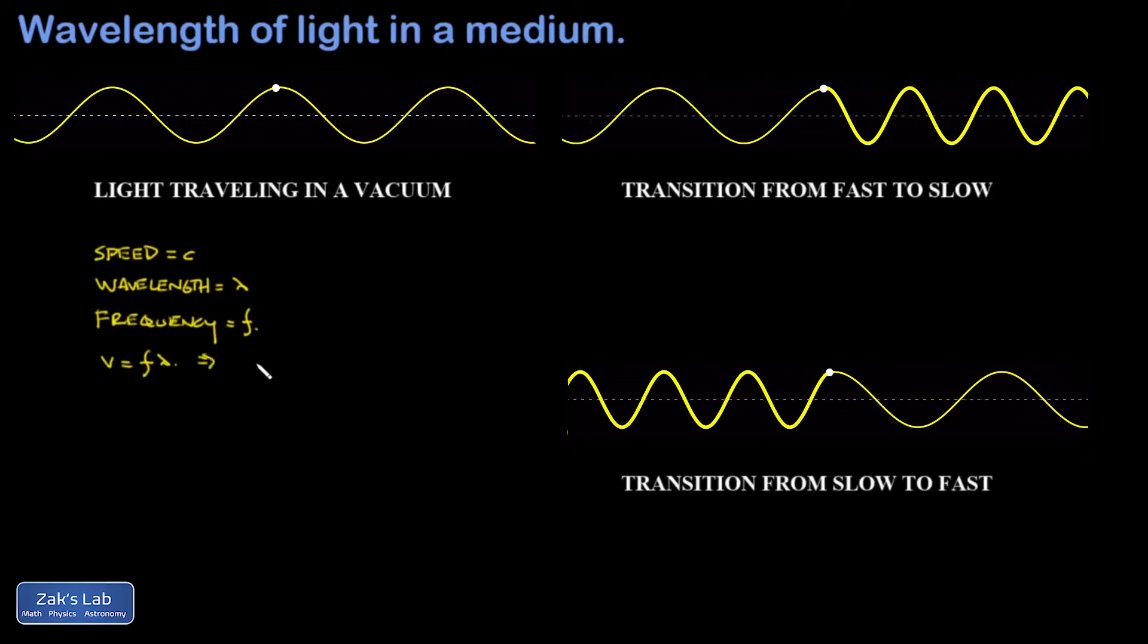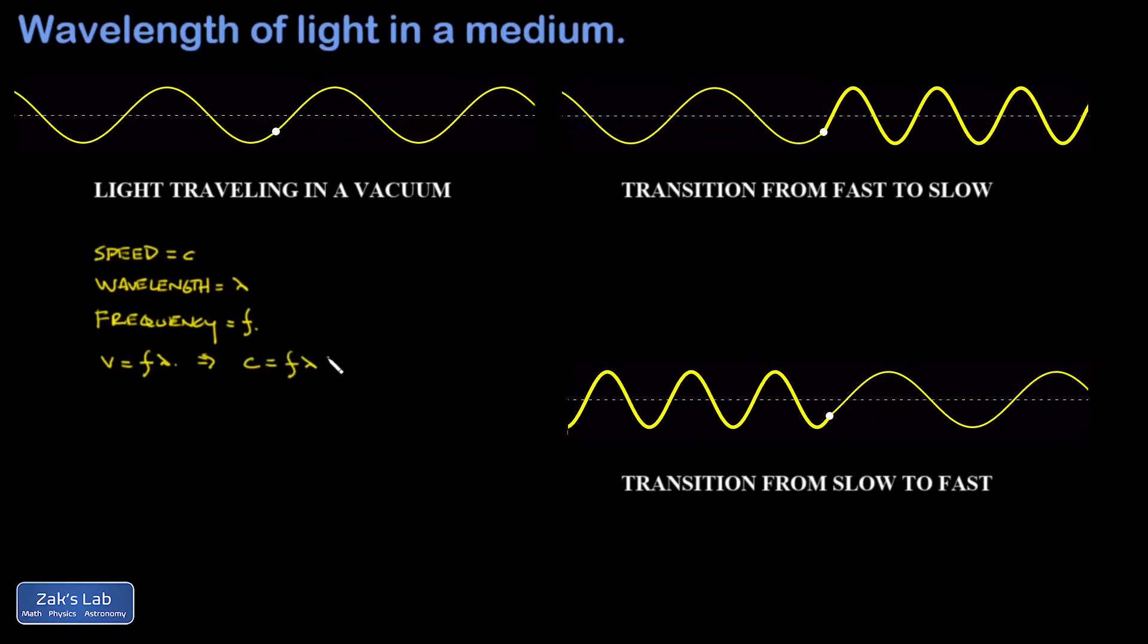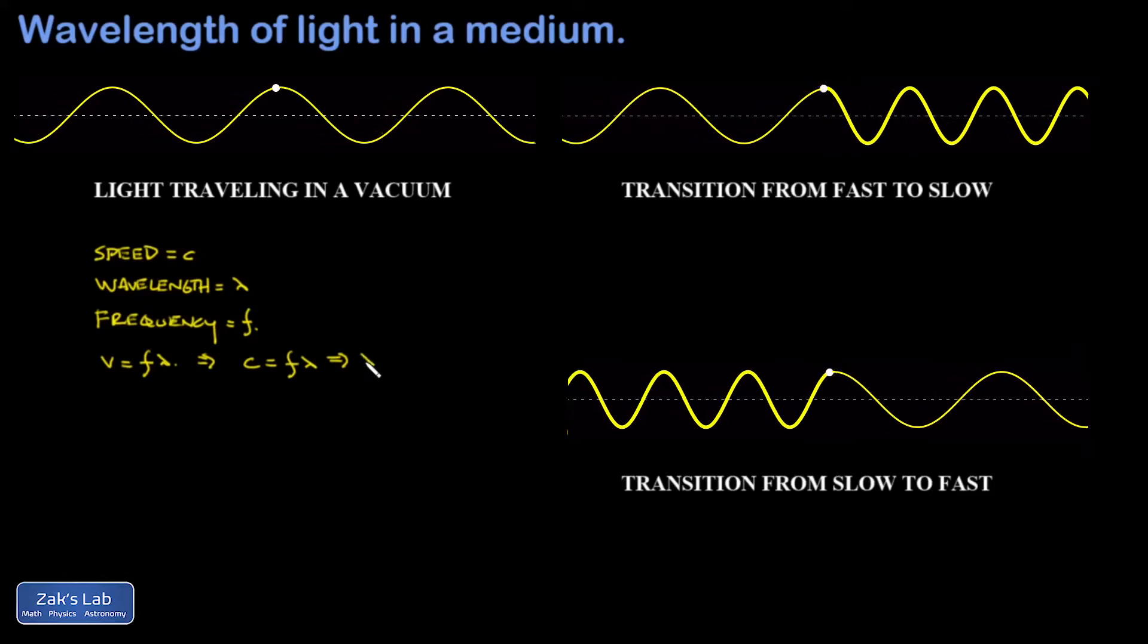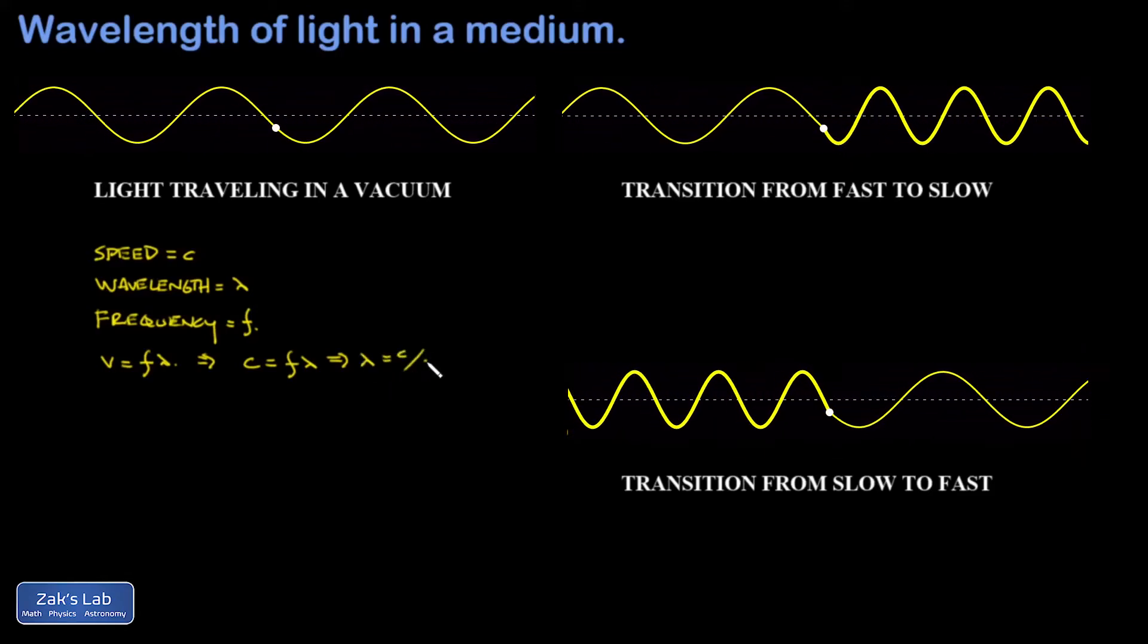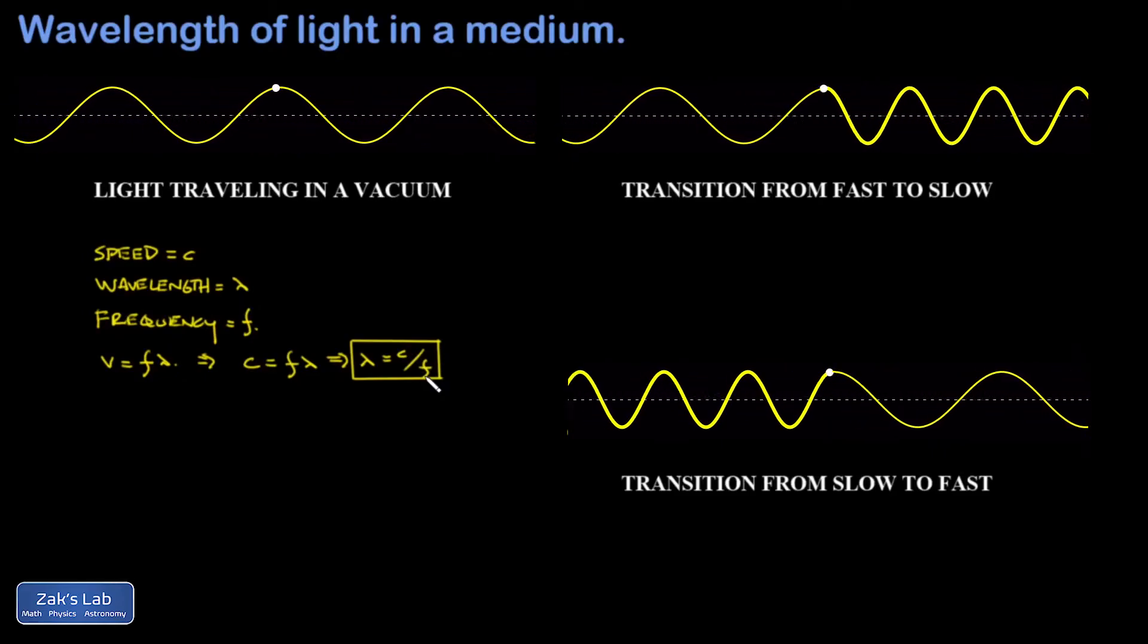Well, in this case, that means C equals F lambda, or I could say the wavelength is C over F. But what happens to this light wave if it enters a medium, say, glass?